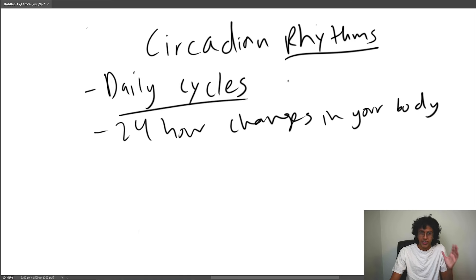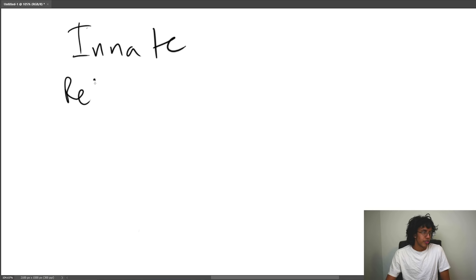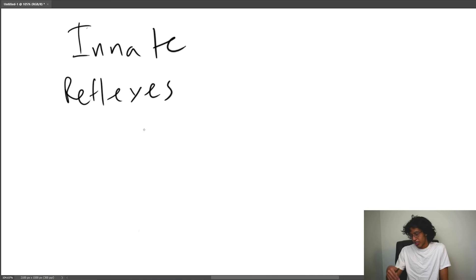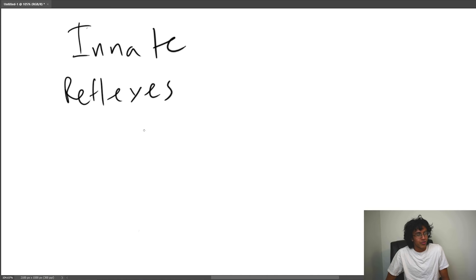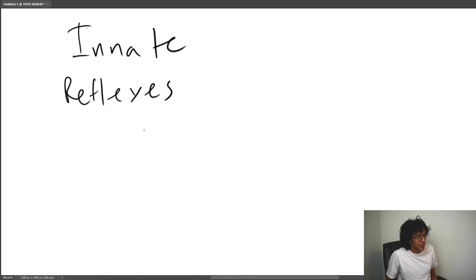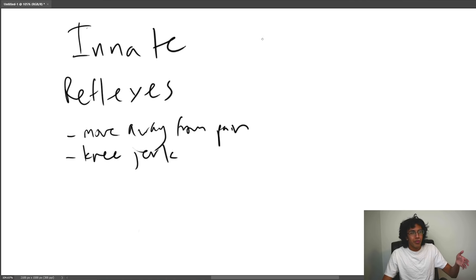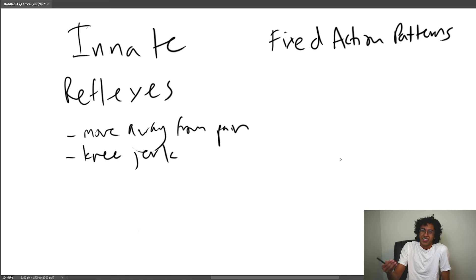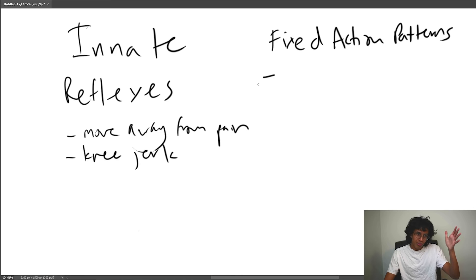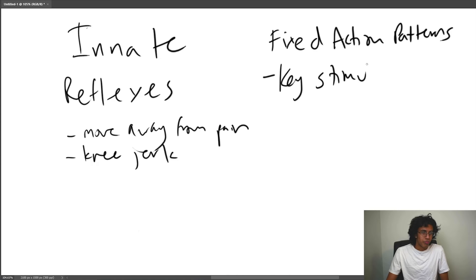Now let's talk about the second question: how is behavior learned? We have innate versus learned behaviors. Starting with innate: reflexes are the obvious one — automatically pulling your foot up when you step on a tack, or your knee kicking when a doctor hits that ligament with a rubber hammer. There are also fixed action patterns: when an organism sees a certain stimulus, it goes through a specific pattern of behavior every single time. The stimulus that causes it is called the key stimulus.